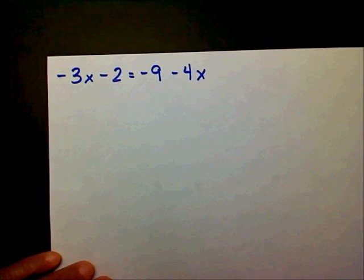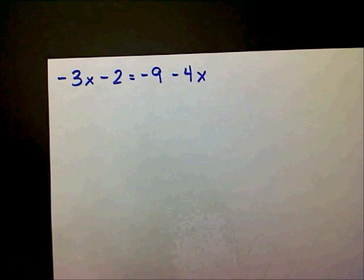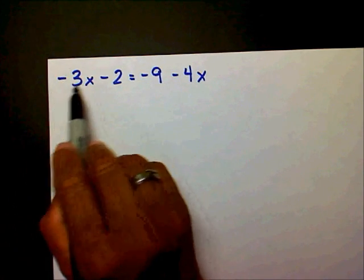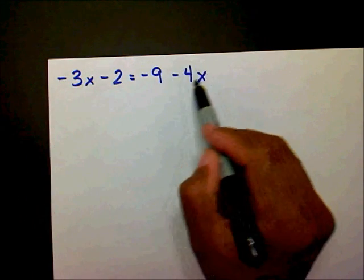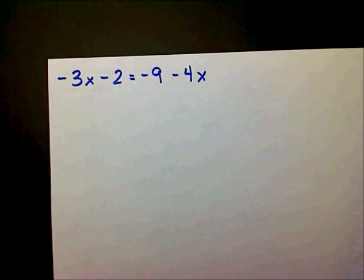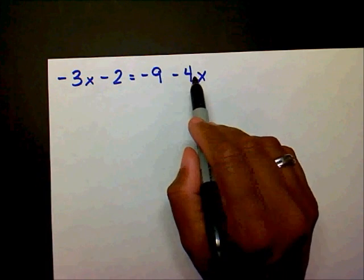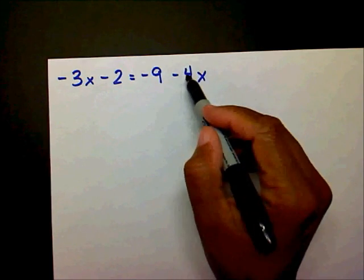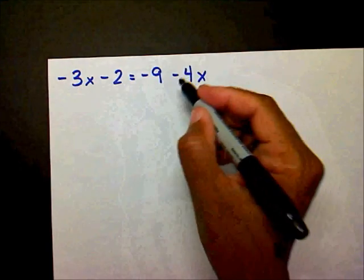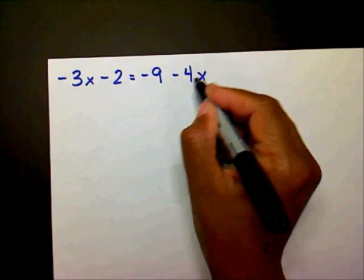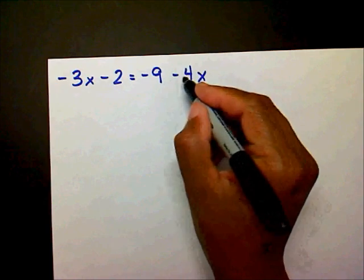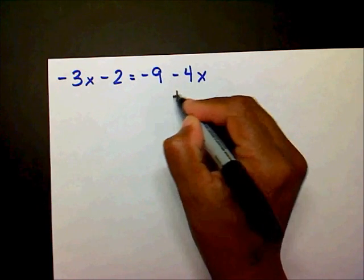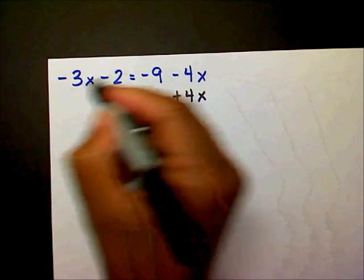Let's solve one more. I want to look for my smallest x term. I have a negative 3x and a negative 4x. Which one is smaller — negative 3 or negative 4? Negative 4 is smaller than negative 3, so I'm going to move this negative 4x by adding 4x to both sides.